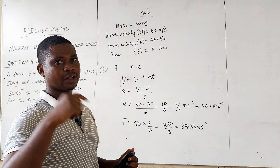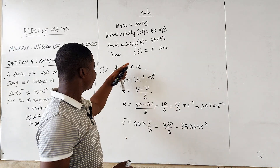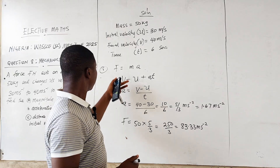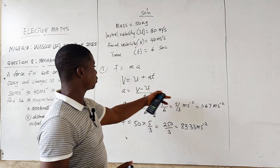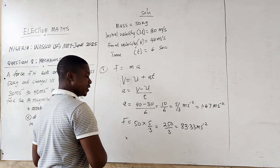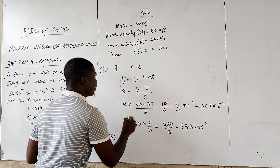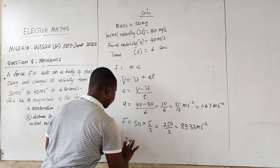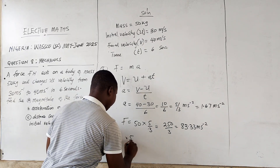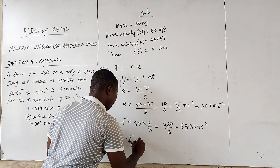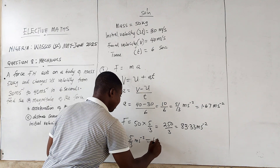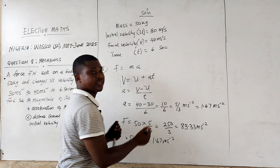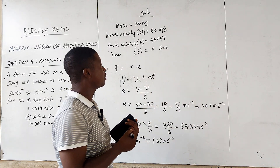For part (b), we are asked to find the acceleration. We already found it when solving for the force. So acceleration is 5/3 meters per second squared, which is the same as 1.67 meters per second squared.